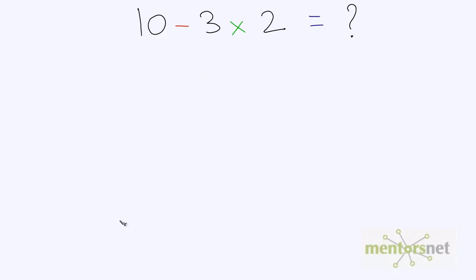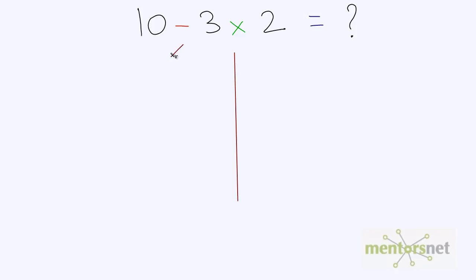Suppose that right now we don't know anything about Bodmer's rule and we have to evaluate this expression. There could be two ways of solving this expression. One way would be to solve the subtraction operation first and then do the multiplication. So first I will do the subtraction operation here, so I get 7 times 2. Now the multiplication operation, so 7 times 2 is 14.